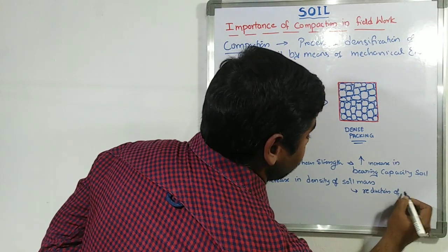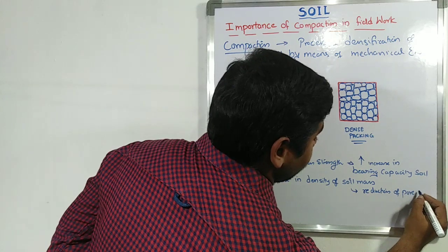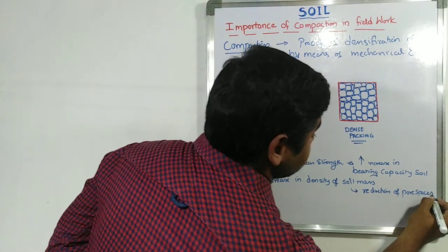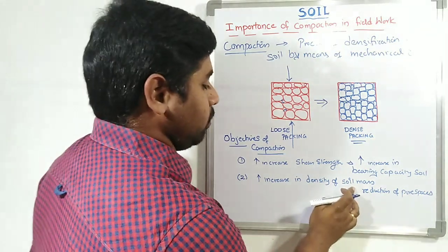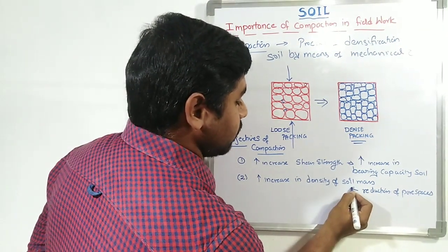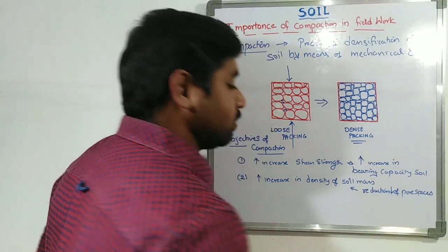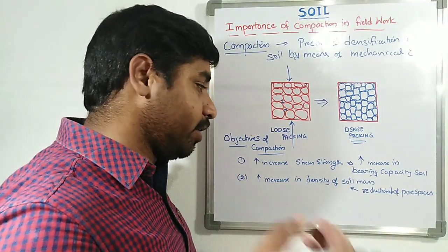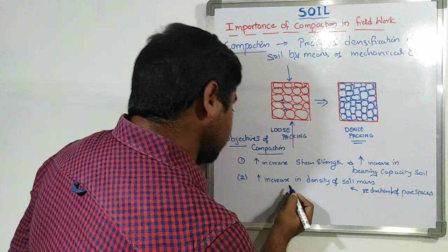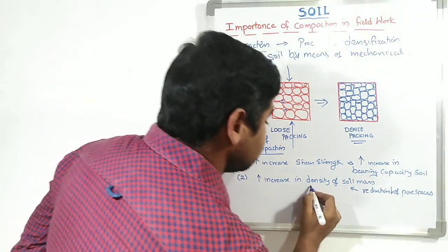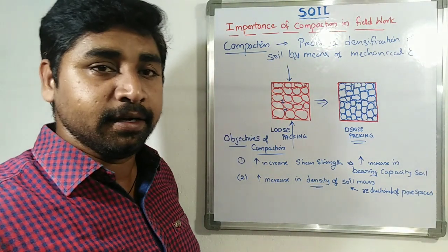So here because of compaction, reduction of pore spaces is going to take place. Pore spaces are going to get reduced, which in turn results in the increase in density of the soil.